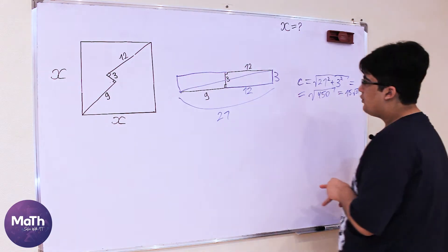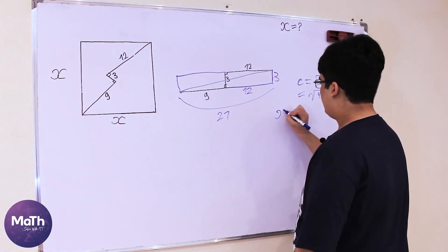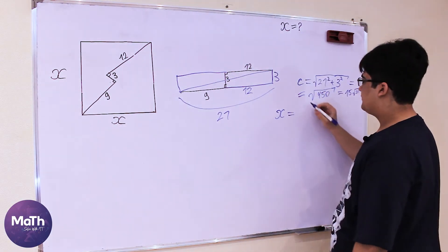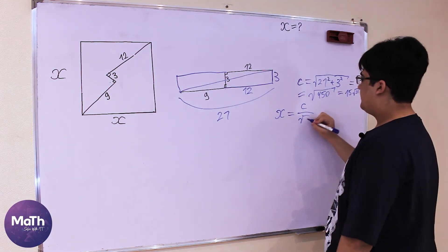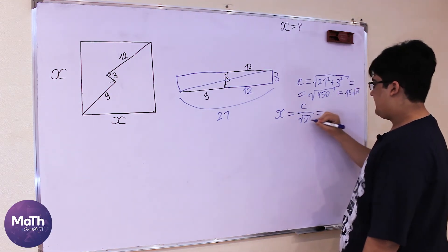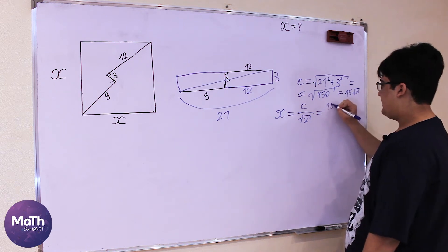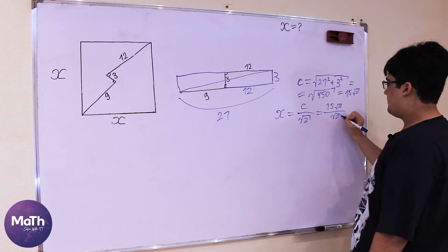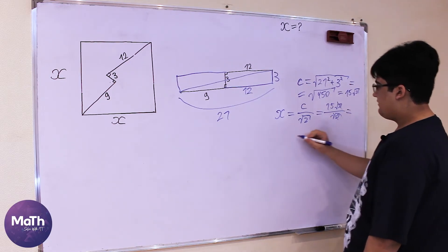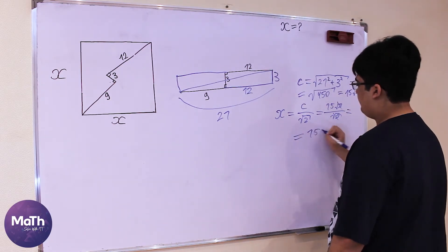So the side of the square, which is x, equals C divided by square root of 2. That equals 15 square root of 2 divided by square root of 2, and the answer is 15.